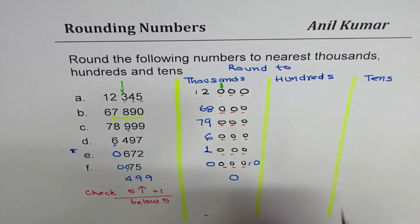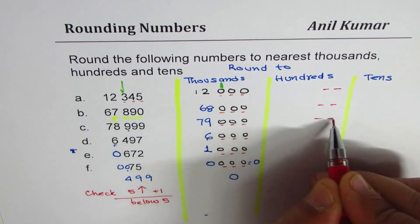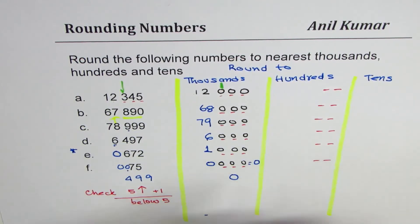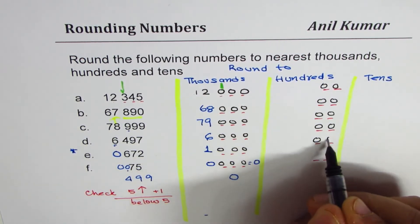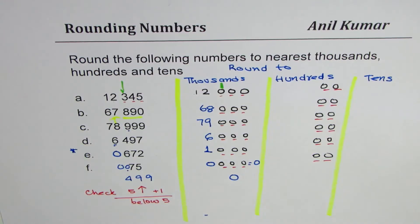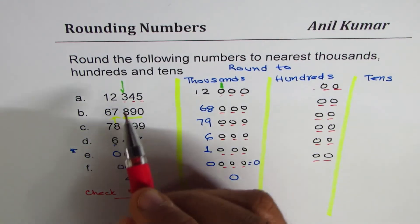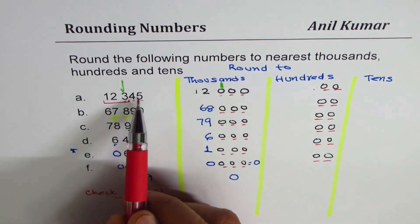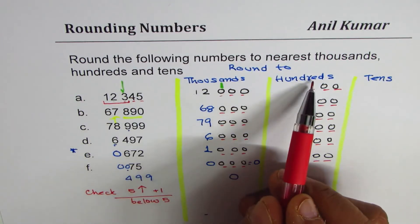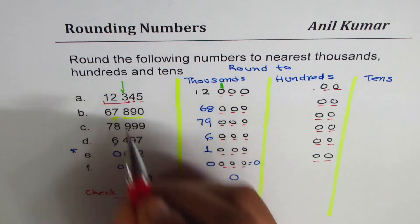Now let's move on to rounding to hundreds. For hundreds, you put two zeros — those last two places become zeros. To round to hundreds, you have to check the tens place. If you write one in the hundreds place, it becomes 100. That is how hundreds rounding works.